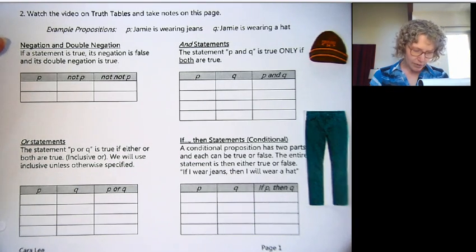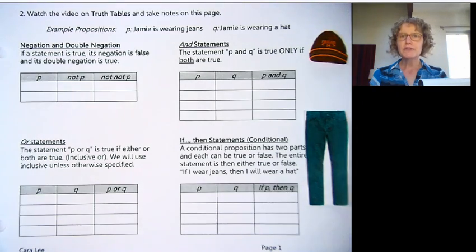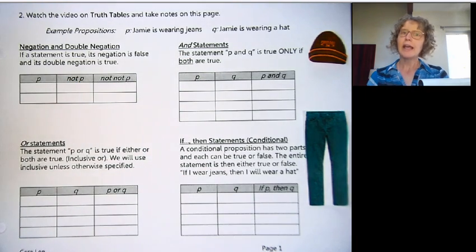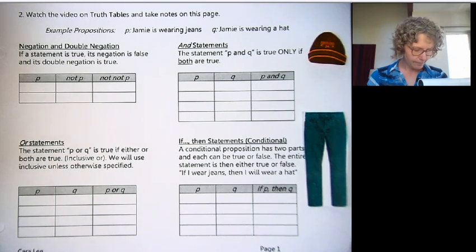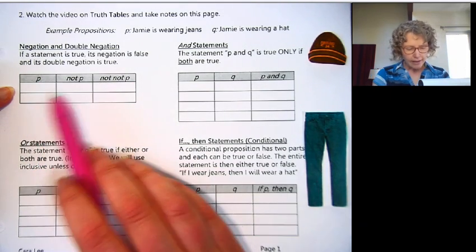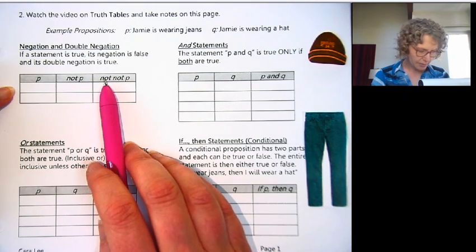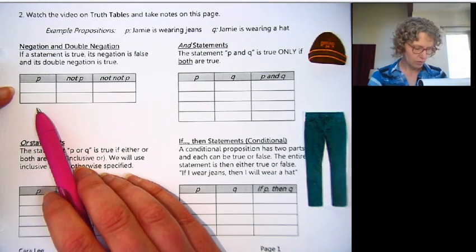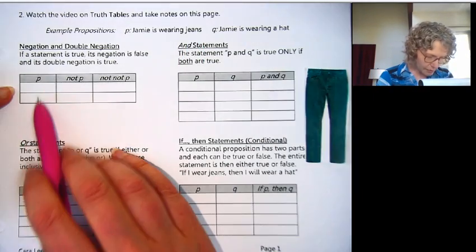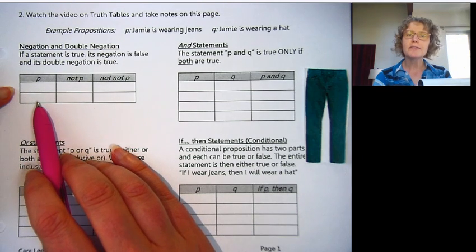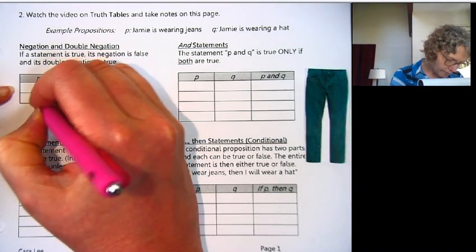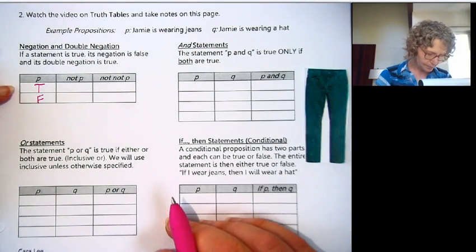We have our jeans and hat over here to help us out and visualize things. Once we have our propositions, then people put those together into larger statements using negation like not, and, or, and if-then. We're going to analyze all of these today in truth tables. This is what a truth table looks like. It's a table with a column for the proposition and then whatever connectors you're using. For negation and double negation, we're just using a single one, P. The first thing we want to do is put all the possibilities in for P. The only possible options for P are true or false. Jamie's wearing jeans or not, there's no in between here.